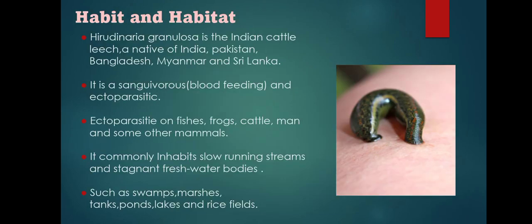Hirudinaria granulosa is the Indian cattle leech, a native of India, Pakistan, Bangladesh, Myanmar, and Sri Lanka. It is sanguivorous — a blood-feeding ectoparasite on fishes, frogs, cattle, man, and other mammals. It commonly inhabits slow-running streams and stagnant freshwater bodies such as swamps, marshes, tanks, ponds, lakes, and rice fields.